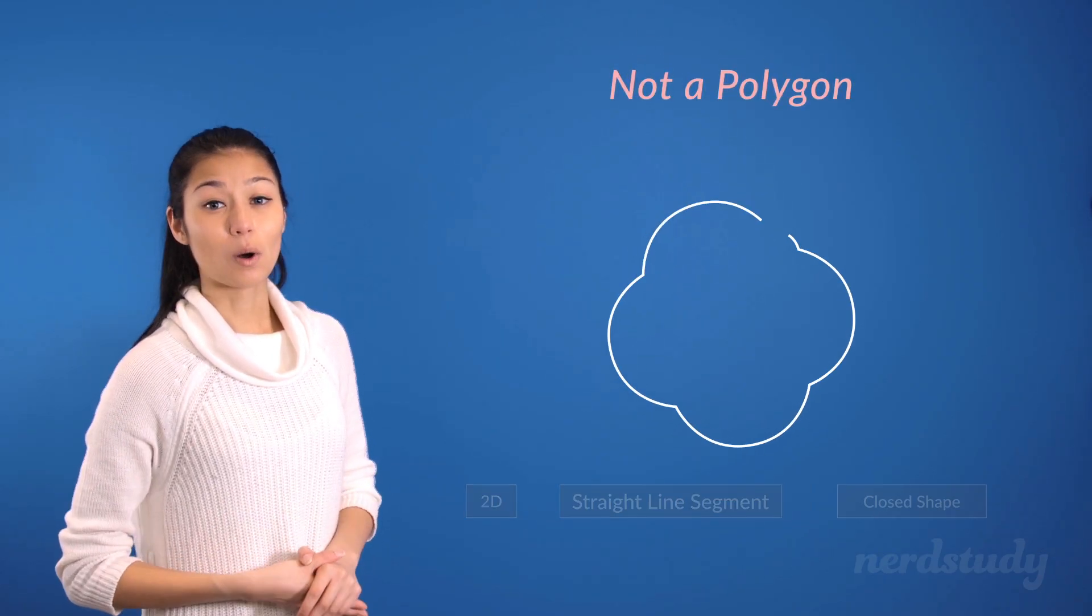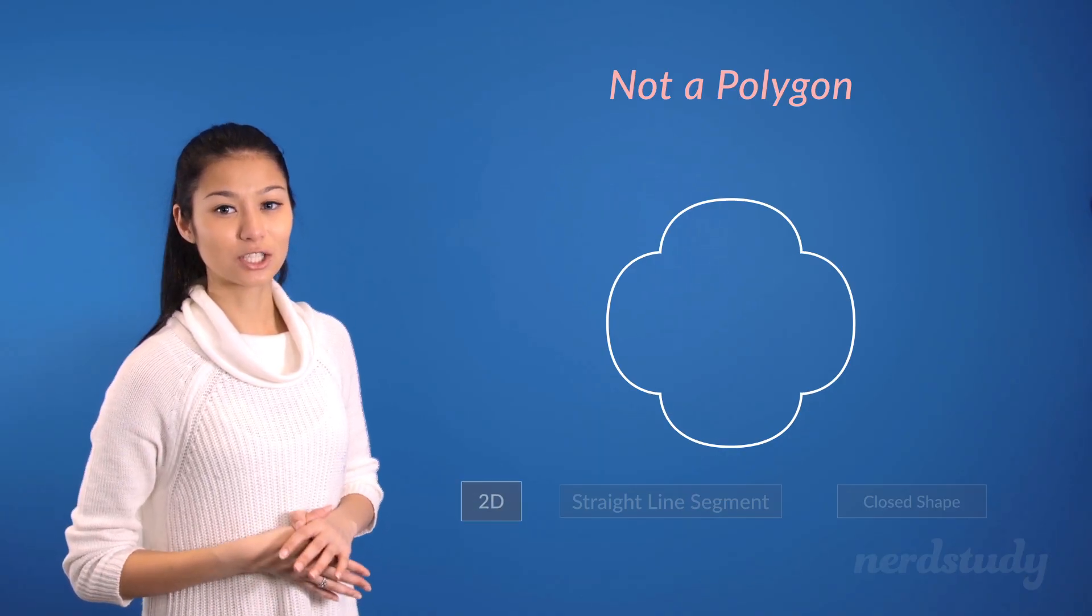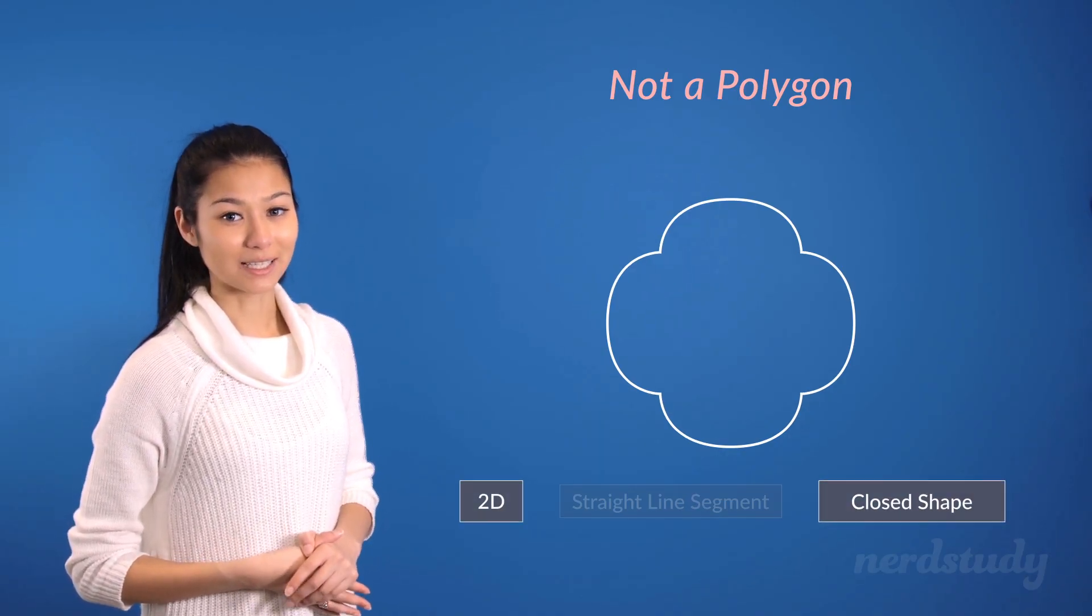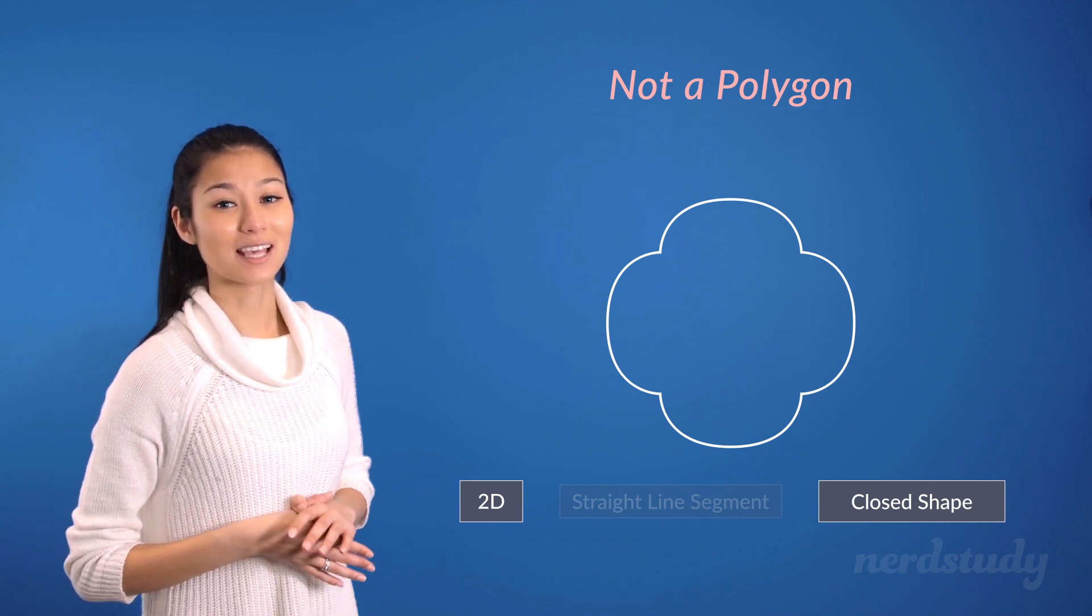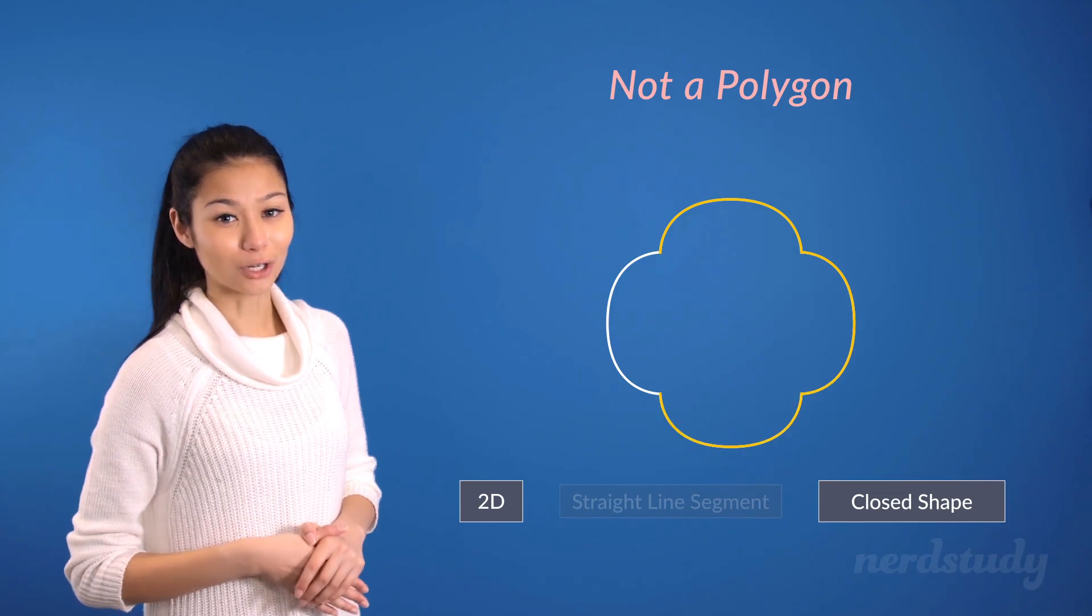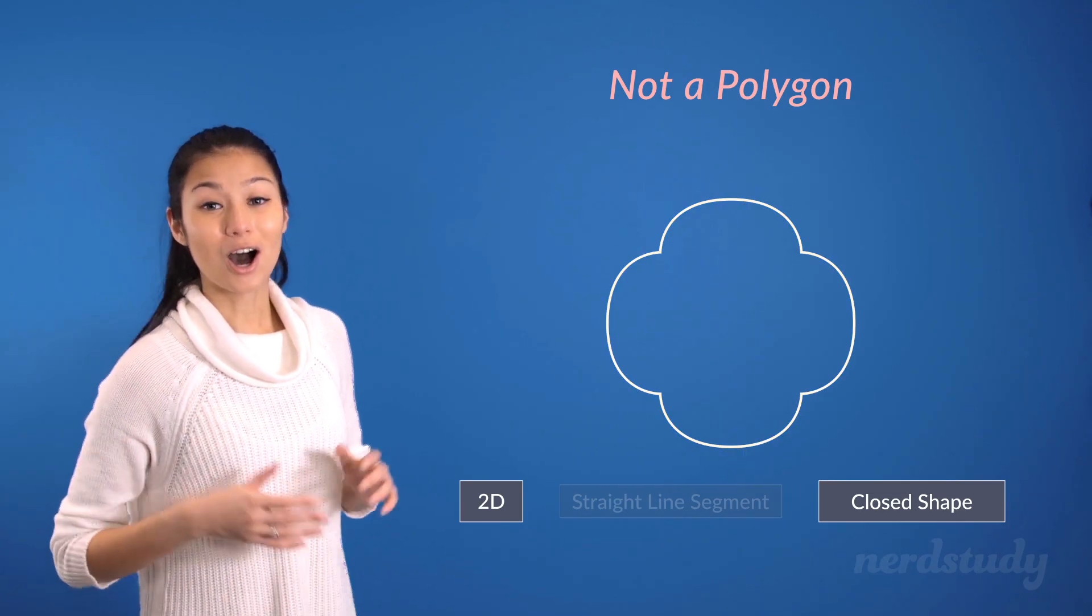Also, while this unique looking shape here is two-dimensional that is complete, it is not considered a polygon either, since its edges are not straight lines, but rather curved.